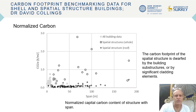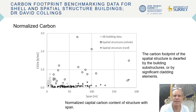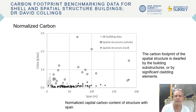This chart looks at the difference between the carbon content of the spatial roof structure and the rest of the building. You can see that the carbon footprint of the spatial structure is generally dwarfed by the rest of the building — by the substructures or significant cladding elements.